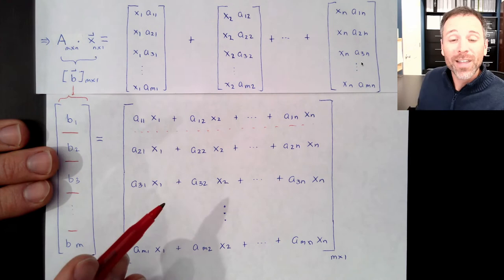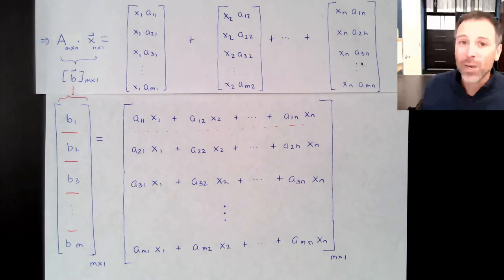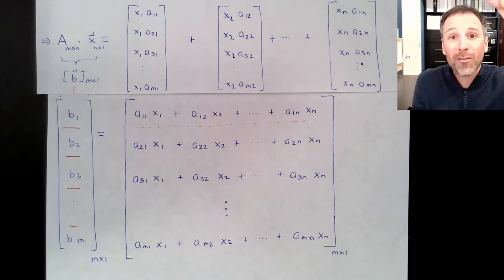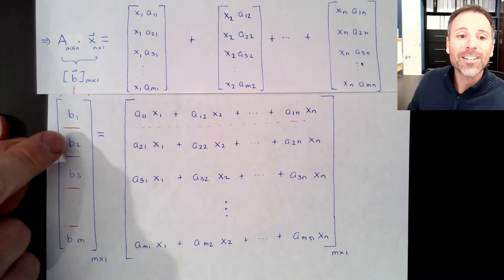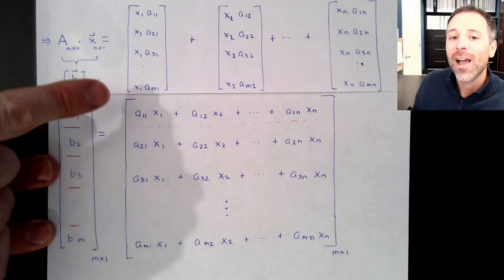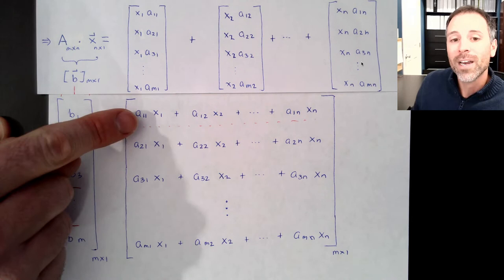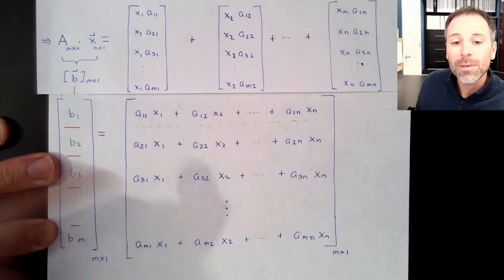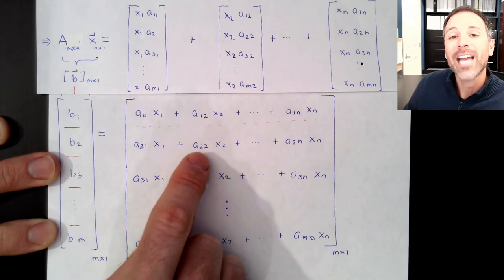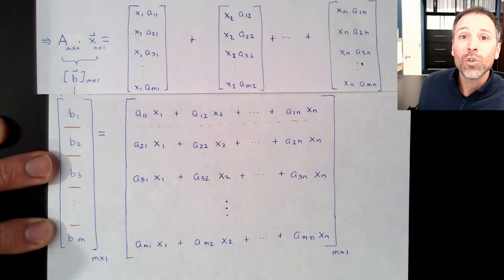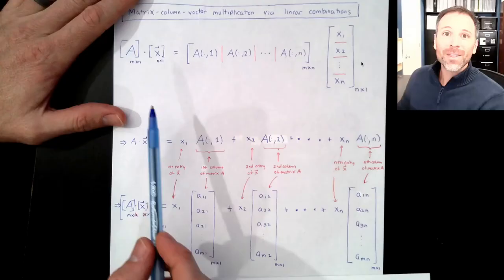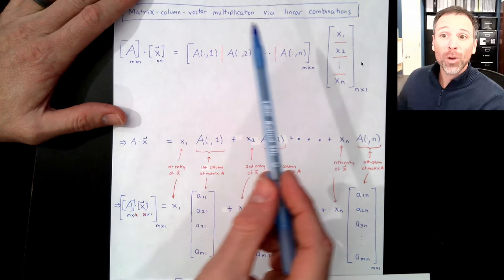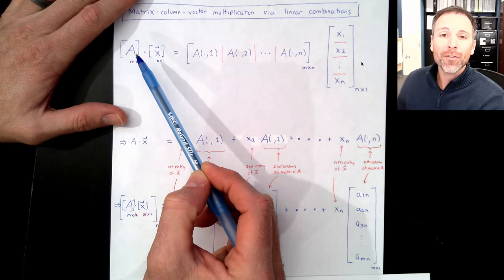We can go down to the entry level, and in a few videos we'll introduce an alternate form: instead of thinking about vector B in terms of column chunks, we'll think about its individual entries. Hidden in each entry is a dot product — B1 is a dot product between two vectors, B2 is a dot product between two vectors, and every individual entry can be calculated as a dot product. That will be an alternate form of matrix-vector products.